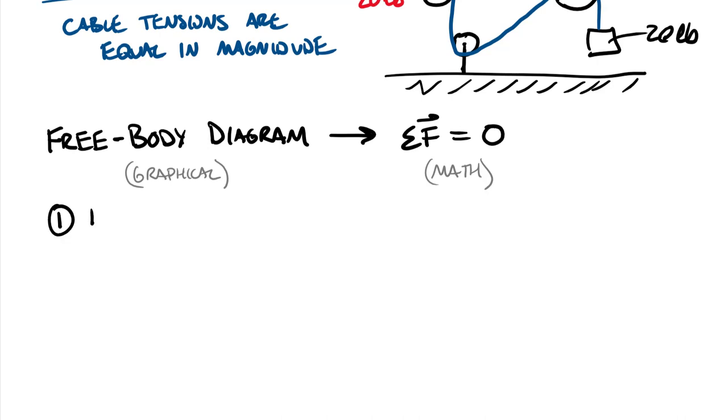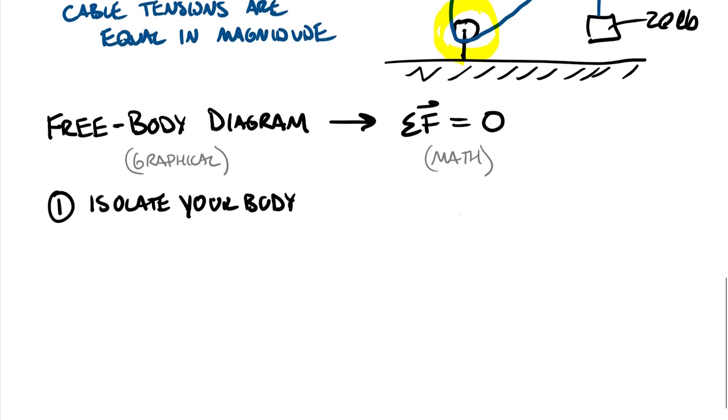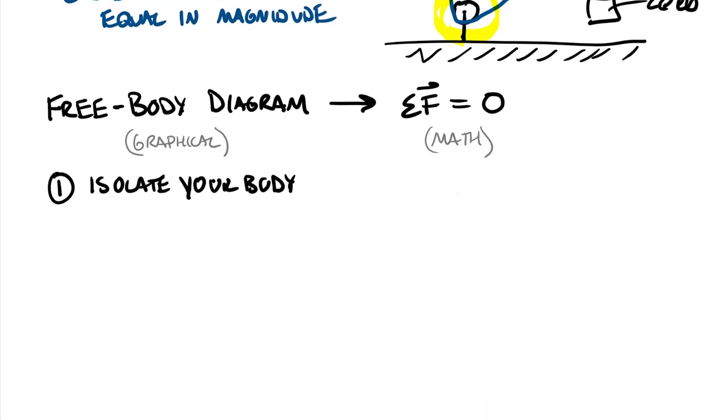And so to create a free body diagram, we have multiple steps. The first step is to isolate your body. And really what that's saying is to choose what body, what rigid body or what assembly of rigid bodies that you want to create a free body diagram for. And so when you isolate, you fundamentally cut away everything else that's around that item. So in this case here, if I isolated this bottom pulley, I would cut around where that yellow line is. And I can see I cut two different tensions around that pulley.